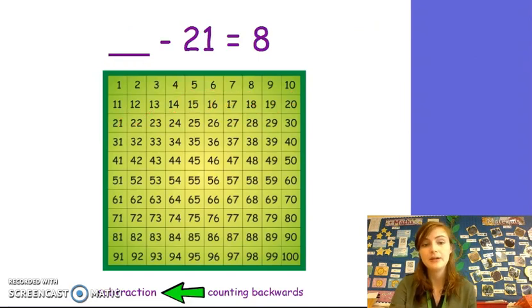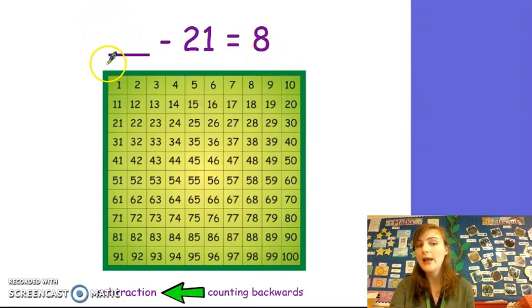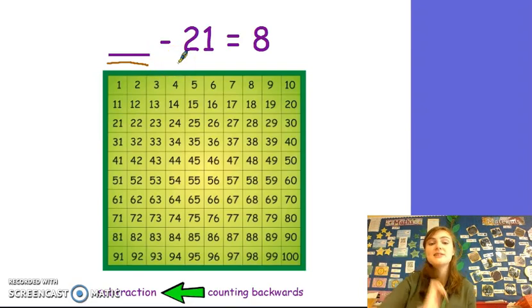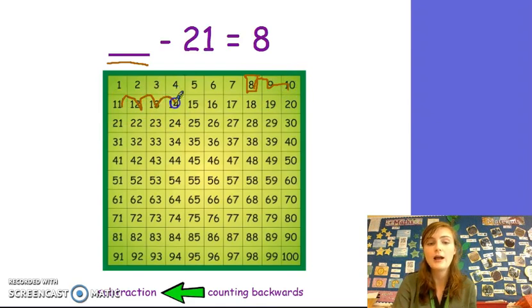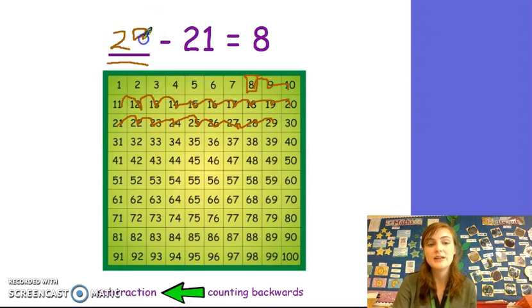Now that one was a lot trickier and we really had to think about it. So let's try another one together. Something take away 21 is equal to 8. So I had a bigger number, and I took 21 away from it, and I was left with 8. So I can start on 8 and give those 21 back to find how many I had to begin with. That's right — we need to count forwards 21. 1, 2, 3, 4, 5, 6, 7, 8, 9, 10, 11, 12, 13, 14, 15, 16, 17, 18, 19, 20, 21. My answer is 29. 29 take away 21 equals 8. Well done.